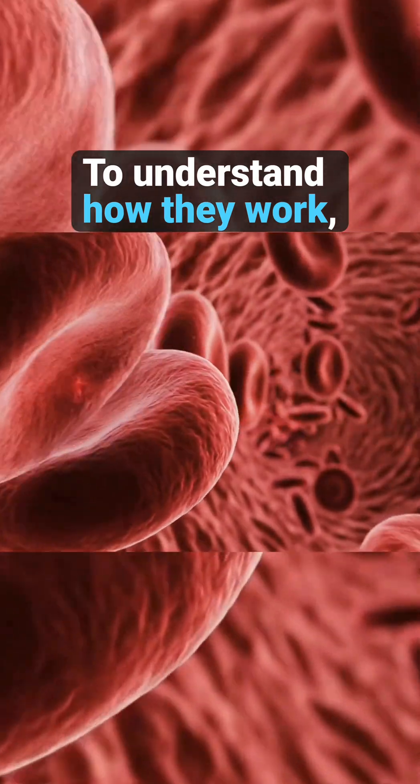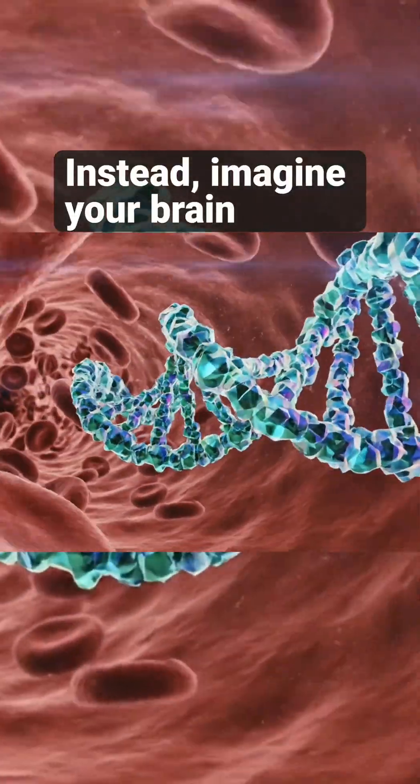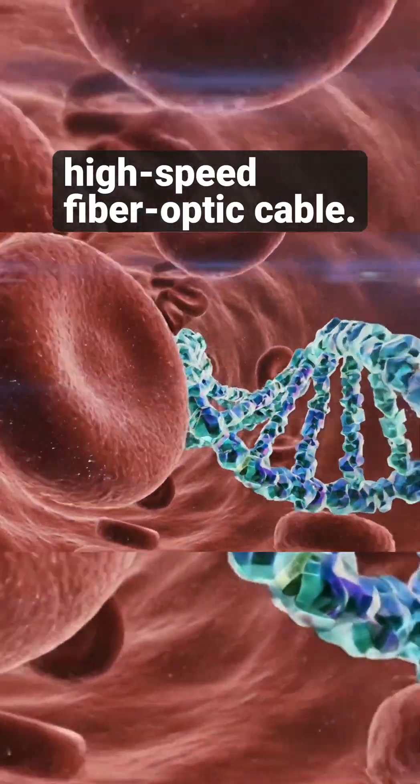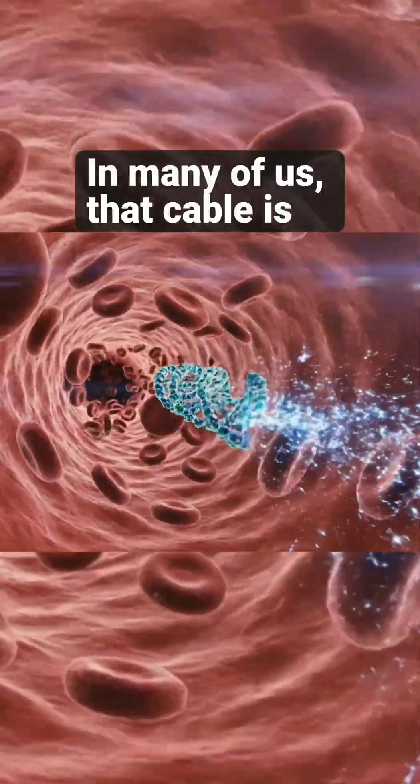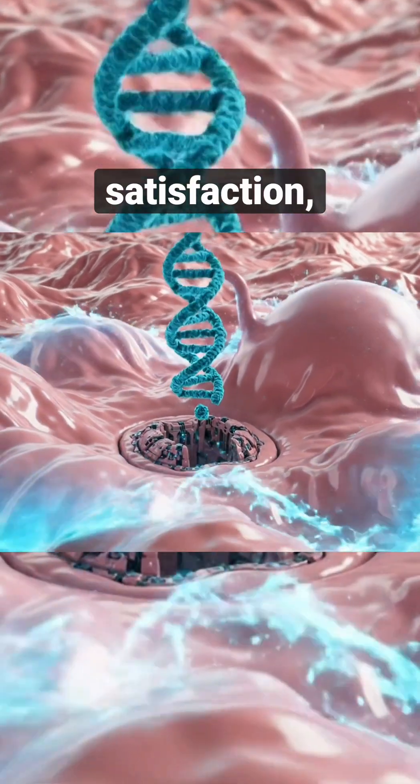To understand how they work, stop thinking about them as diet pills. Instead, imagine your brain and gut are connected by a high-speed fiber optic cable. In many of us, that cable is frayed. Signals for hunger, satisfaction, and even the urge to engage in impulsive behaviors get scrambled.